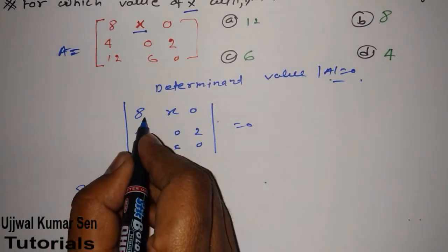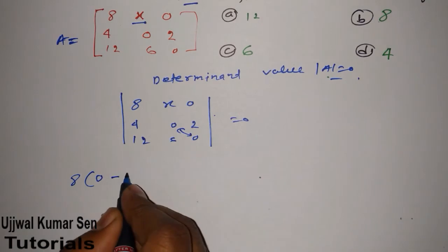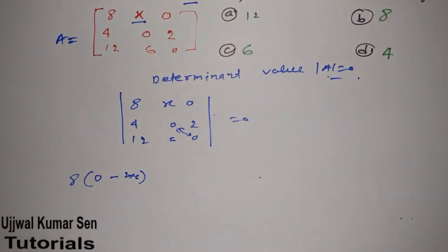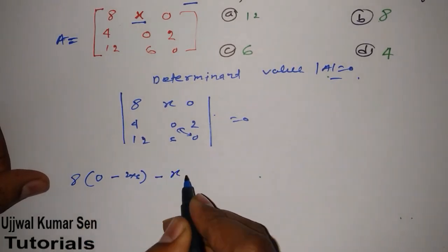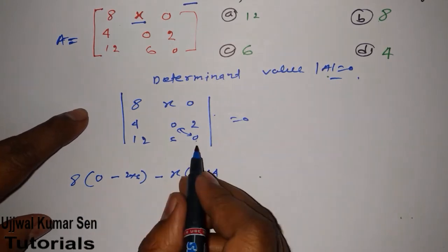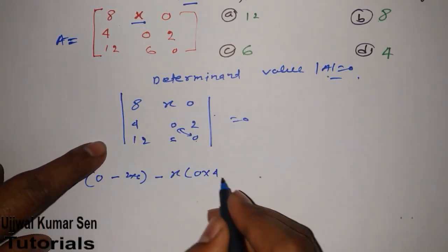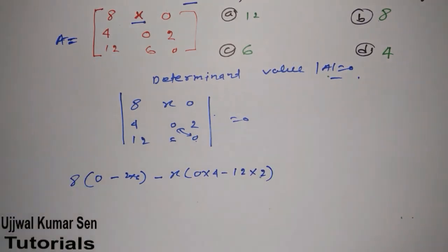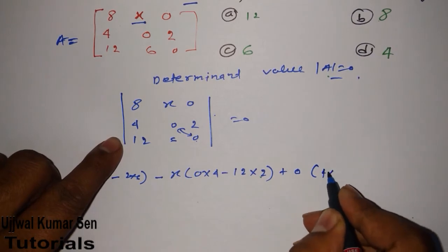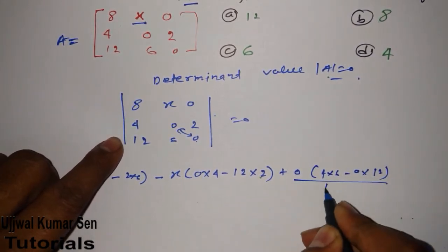So 8 multiplied by 0 minus 2 multiplied by 6. Now minus x multiplied by 0 multiplied by 4, that's 0 multiplied by 4 minus 12 multiplied by 2.